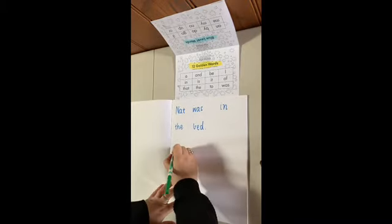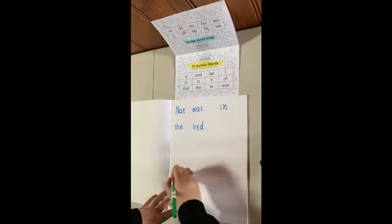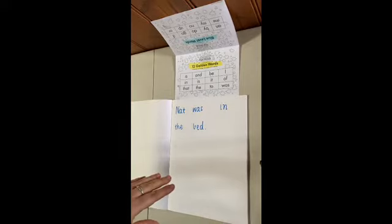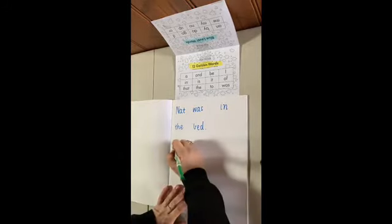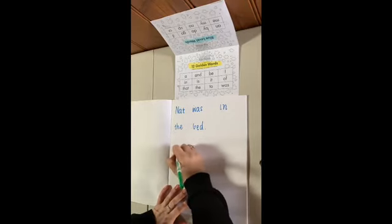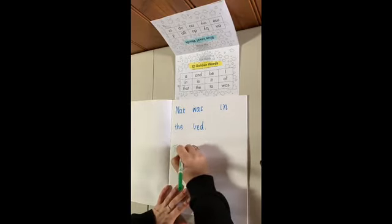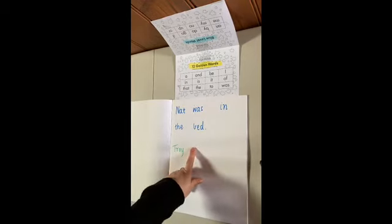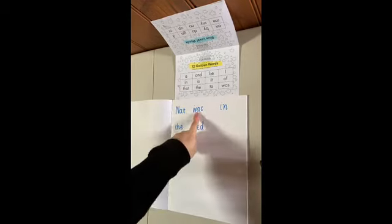Troy was in the box. Okay, so I've got my dots ready. Troy. 'Was' is a golden word and we've already written it. Was.